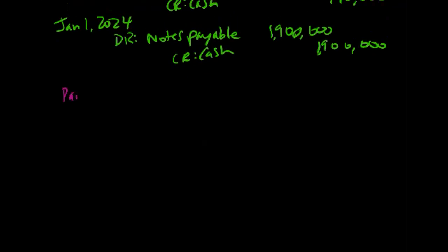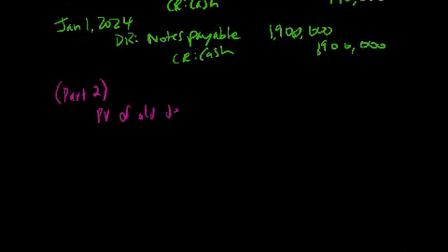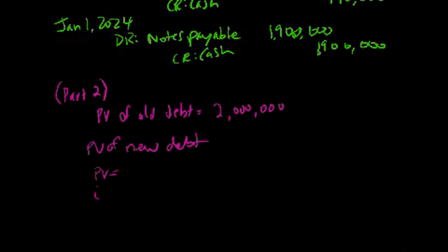Looking at part two: the present value of the old debt before the change was $2 million. Now, what's the present value of the new debt? We need to know present value, and we've got I, N, payment, and future value as our inputs. We know from the question that the principal of the new debt has now been reduced to $1.6 million.